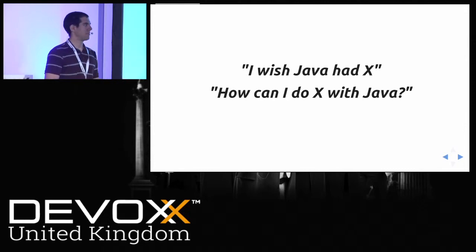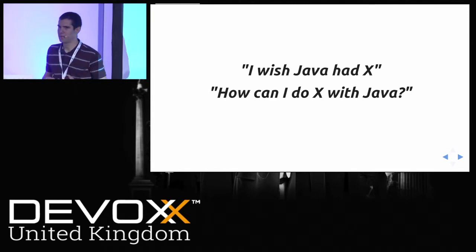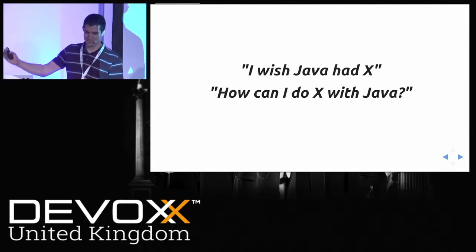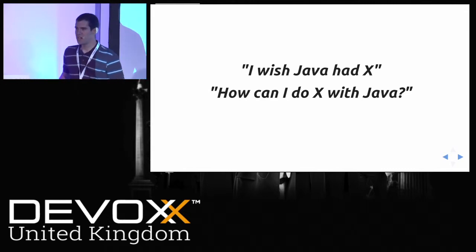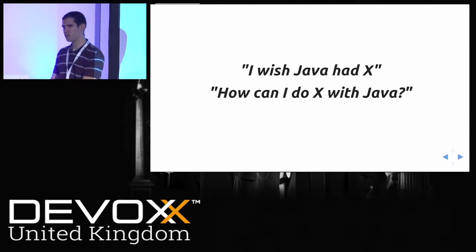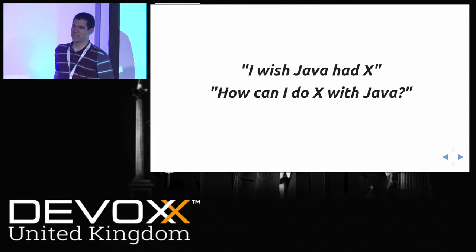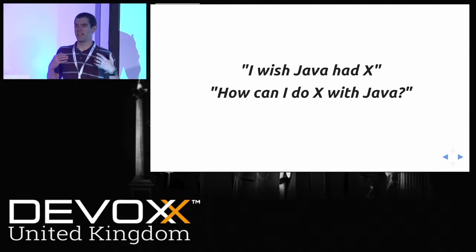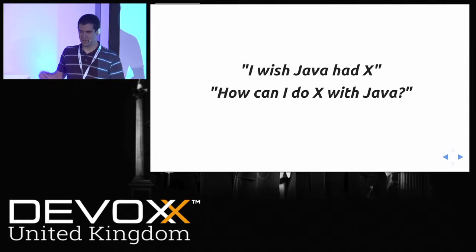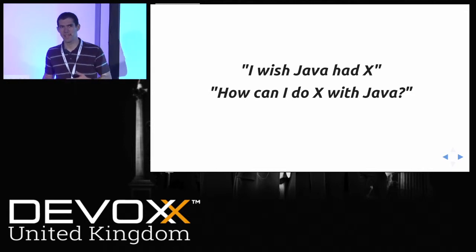The main thing I'd like to get across is going from 'feature envy' of other languages — 'I wish we had this feature in Java' — to asking: can we instead say, I want to write code in that style in Java, using the tools we have available? How could we do that, to express domain problems and intent through the code?